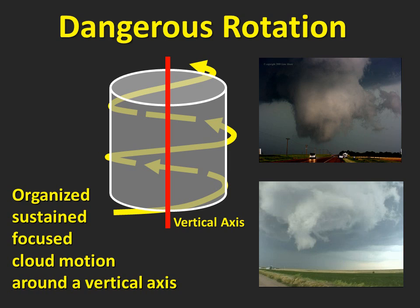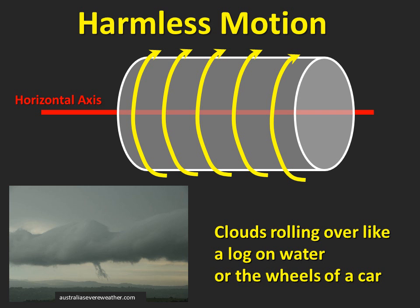In this diagram, the cylinder represents the cloud we're watching. Rotation would be cloud motion like a merry-go-round, in a circle around the imaginary pole running through the middle of the cloud. This motion would be focused around this axis and persistent for several minutes. If you see clouds moving but they're not focused around a vertical axis like this diagram, then it's not rotation.